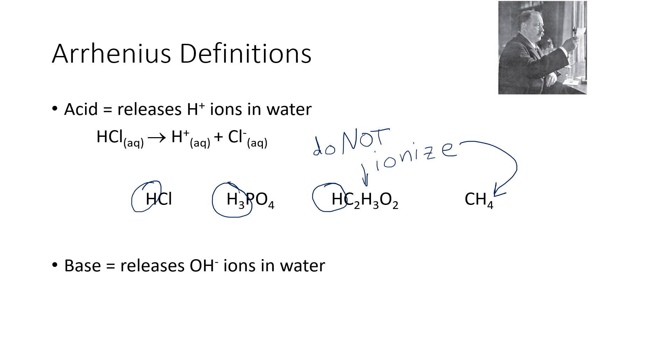A base, according to the Arrhenius definition, is something that releases hydroxide ions in water. So the classic example of a base is sodium hydroxide. As soon as sodium hydroxide hits water and dissolves, it breaks apart to give us the sodium ions and the hydroxide ions. And so those hydroxide ions right there are what makes sodium hydroxide a base.